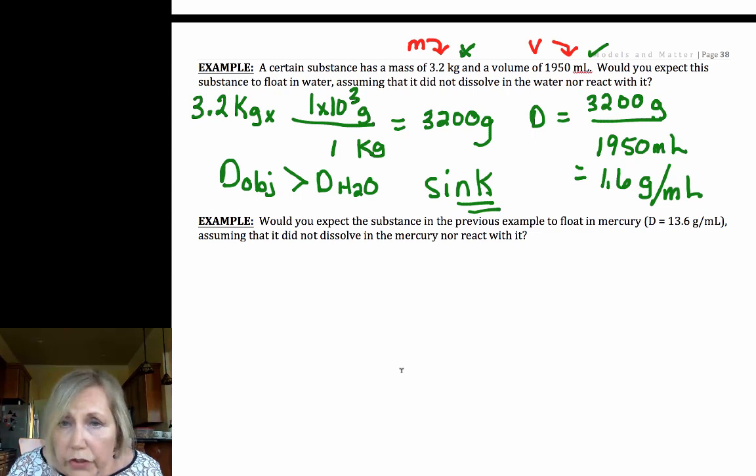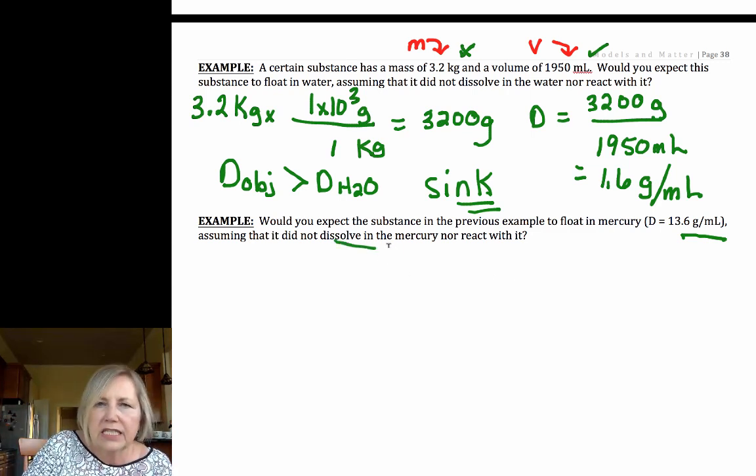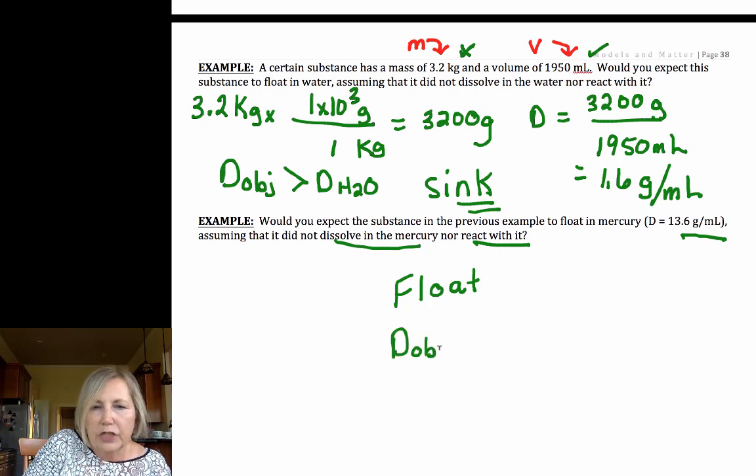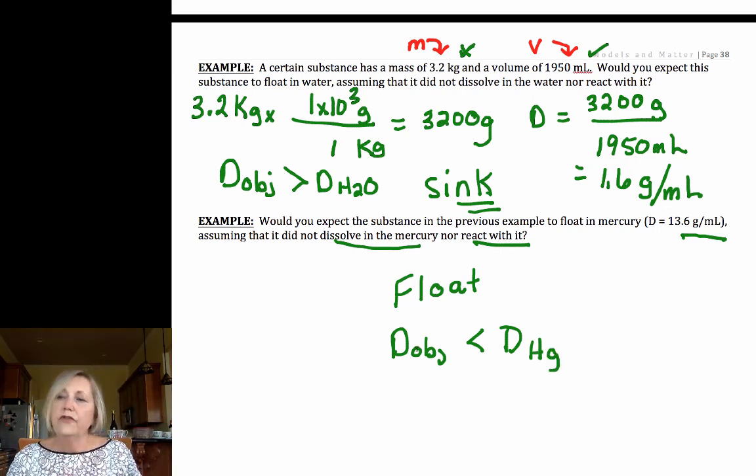Now, what if we put it in mercury? Mercury is very dense. 13 grams is squeezed tightly into 1 milliliter. So assuming the object didn't dissolve in the mercury or react with the mercury, that's important because if it dissolves or reacts, we can't compare densities, right? In this case, it would float. And that's because the density of my object is less than the density of my mercury. So my object would float.